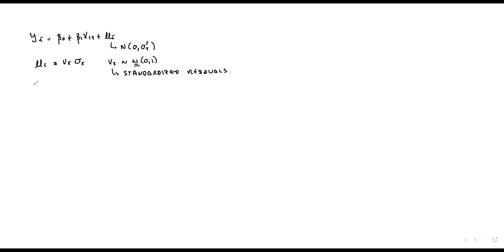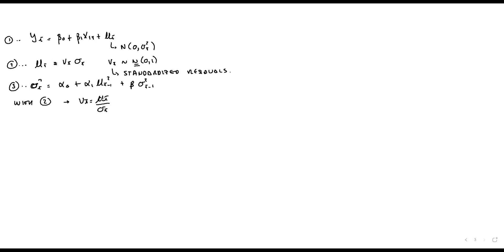We can write the GARCH(1,1) model with sigma-squared of t equal to alpha-0 plus alpha-1 u(t-1)^2 plus beta sigma-squared of t-1. Then B_t is simply u_t divided by sigma_t — a normalized series that should follow a standard normal distribution with mean zero and variance one. To test whether the normality assumption holds, we can apply the Jarque-Bera test to the standardized residuals.